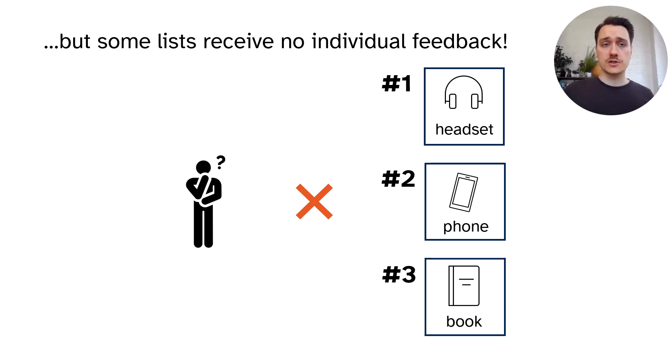For example, when showing a list of products in e-commerce, a customer may not click or buy anything because the selection is too expensive or irrelevant. In fact, at Amazon Search, most lists we show to customers do not receive any interactions.